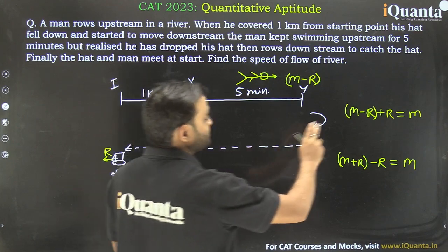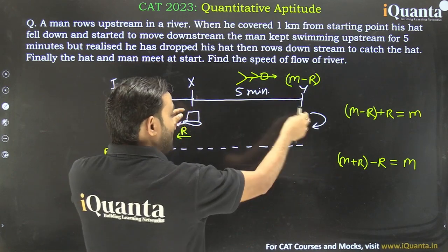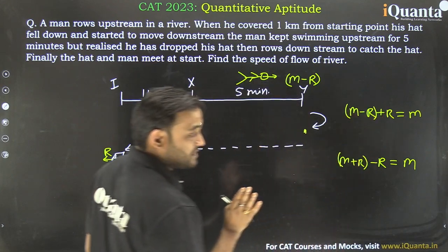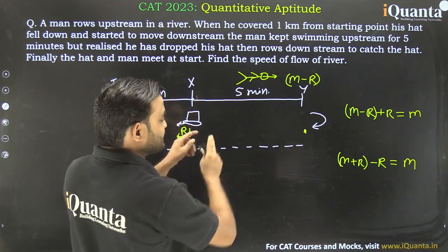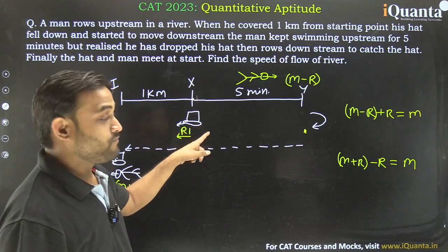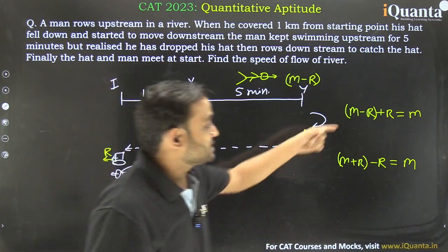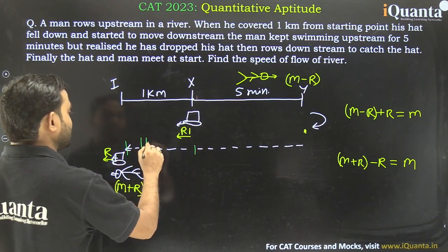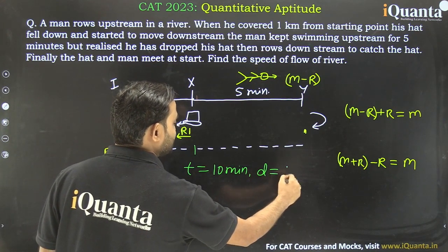So in both cases the relative speed is m. When their relative speed was m, they were apart for five minutes — that's the distance between the man at point Y and the hat at that instant. Now going downstream, their relative speed is again m. Since they were apart for five minutes at that speed, it will take them five minutes to meet again. So the hat has been moving for a total time of ten minutes.